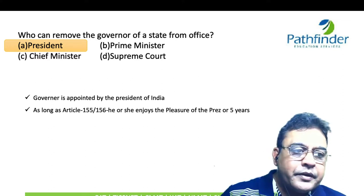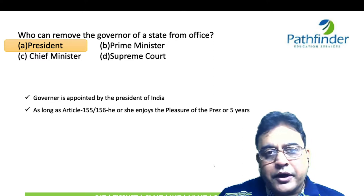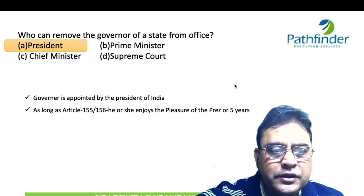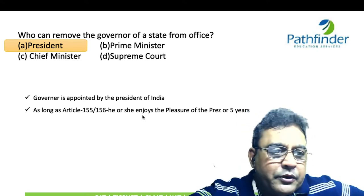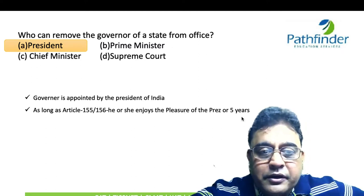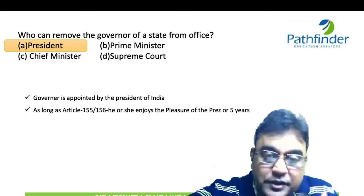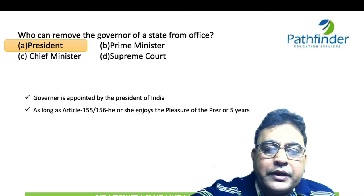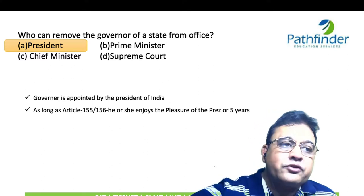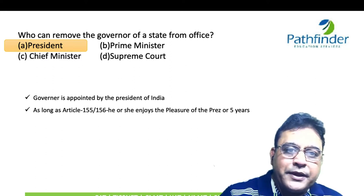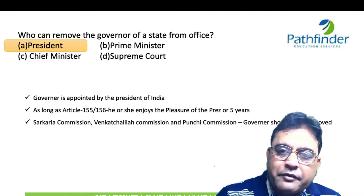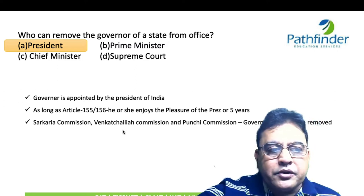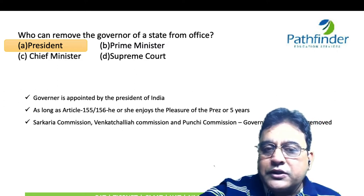The Governor can be removed by the President, who also appoints him under Article 155 and 156. This clearly mentions that as long as the Governor enjoys the pleasure of the President, he can remain in office. The maximum tenure is five years. Several committees — the Sarkaria Commission, Venkatachaliah Commission, and Punchhi Commission — have all addressed this.